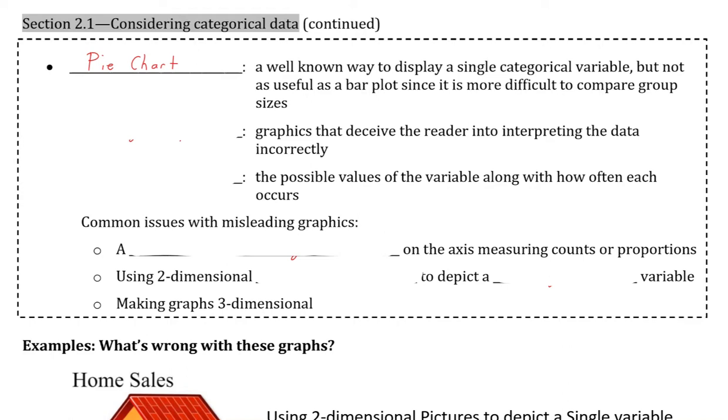I will talk about the third definition before the second. A distribution is anything that displays the possible values of a variable along with how often each occurs. Note that we consider most graphics such as bar plots as distributions since they do display these values and frequencies, but we also consider frequency tables as distributions as well, so it does not only need to be a graphic.